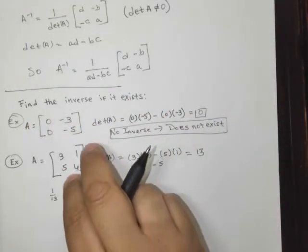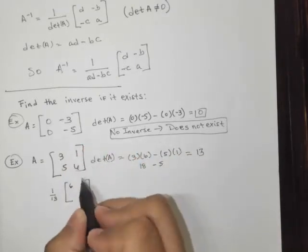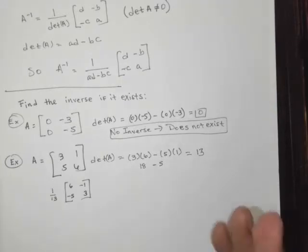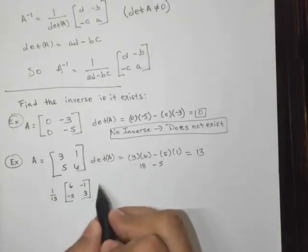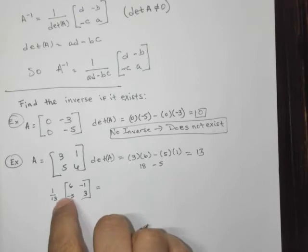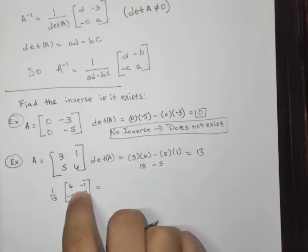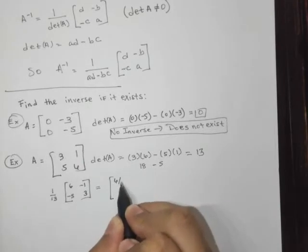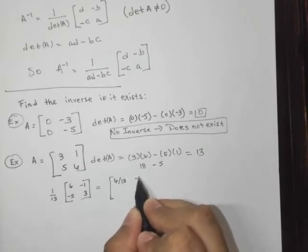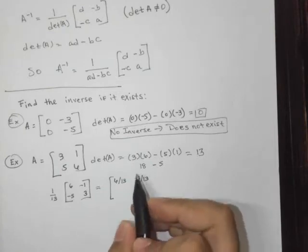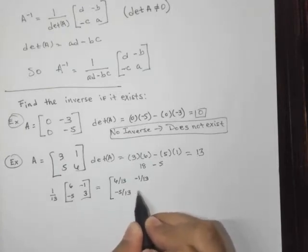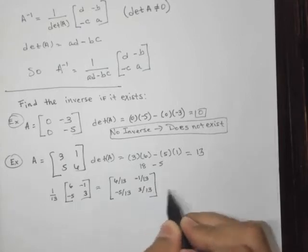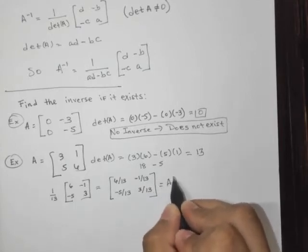And now we take the opposite of the 1 and the 5, making this negative 1 and negative 5. And just one more step, and that is to multiply this scalar multiple inside the matrix. So we get 6 out of 13, negative 1 out of 13, negative 5 out of 13, and 3 out of 13. So this is the matrix A inverse.